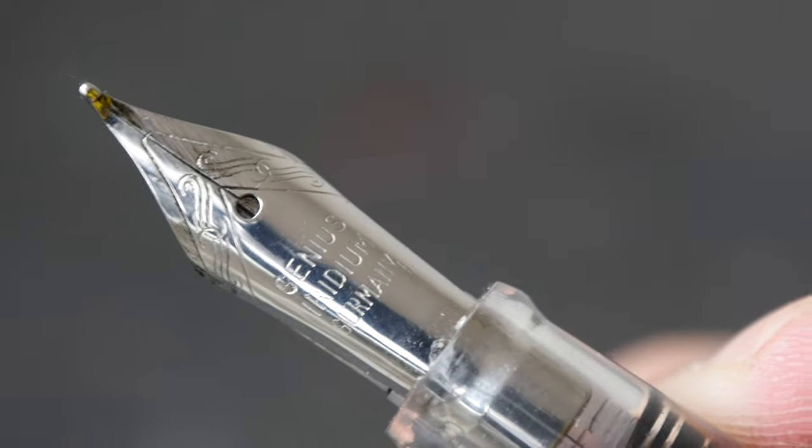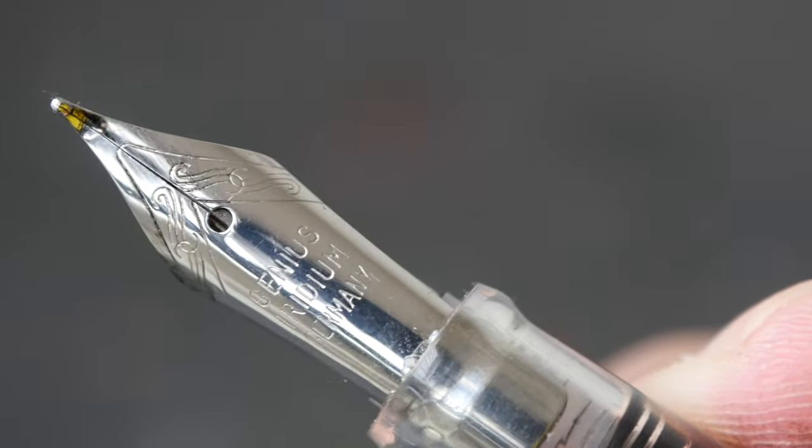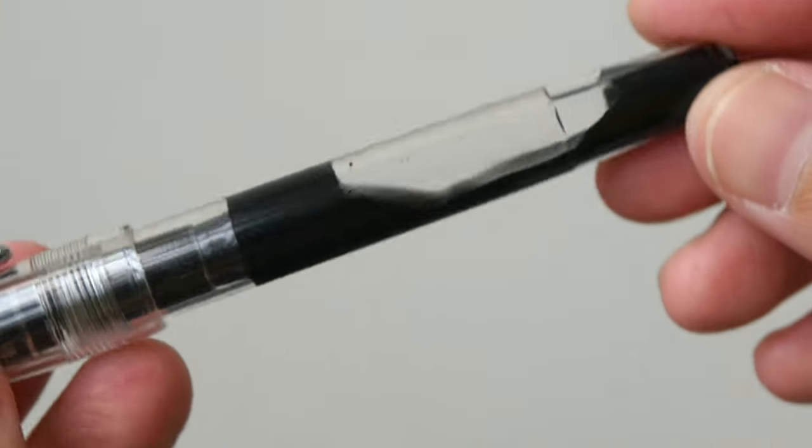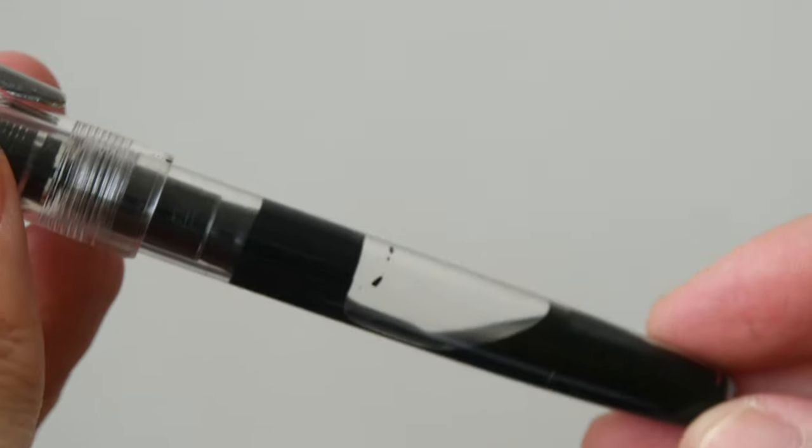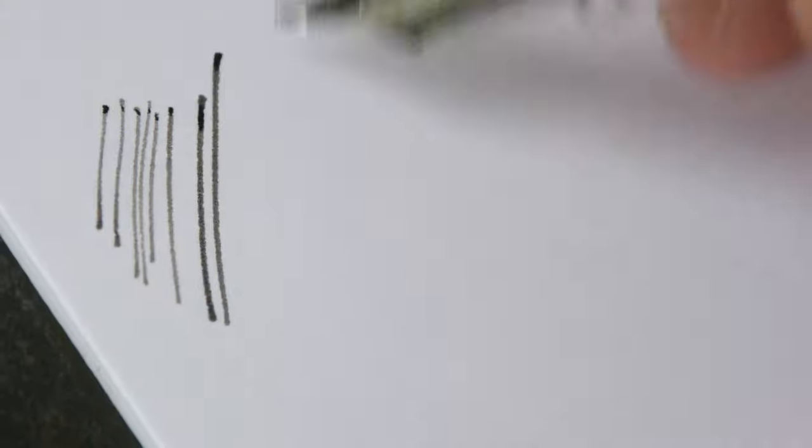Design on top of the pen nib looks like this, with words Genius Iridium Germany. The silicone grease and the rubber stopper seem to be doing a good job at preventing the ink from leaking.